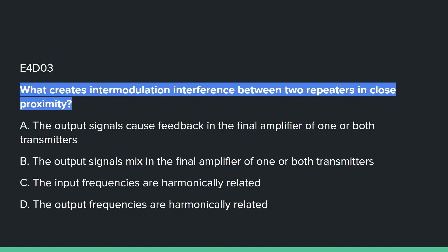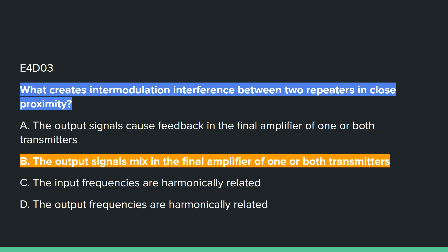E4D03: What creates intermodulation interference between two repeaters in close proximity? Answer B: the output signals mix in the final amplifier of one or both transmitters.